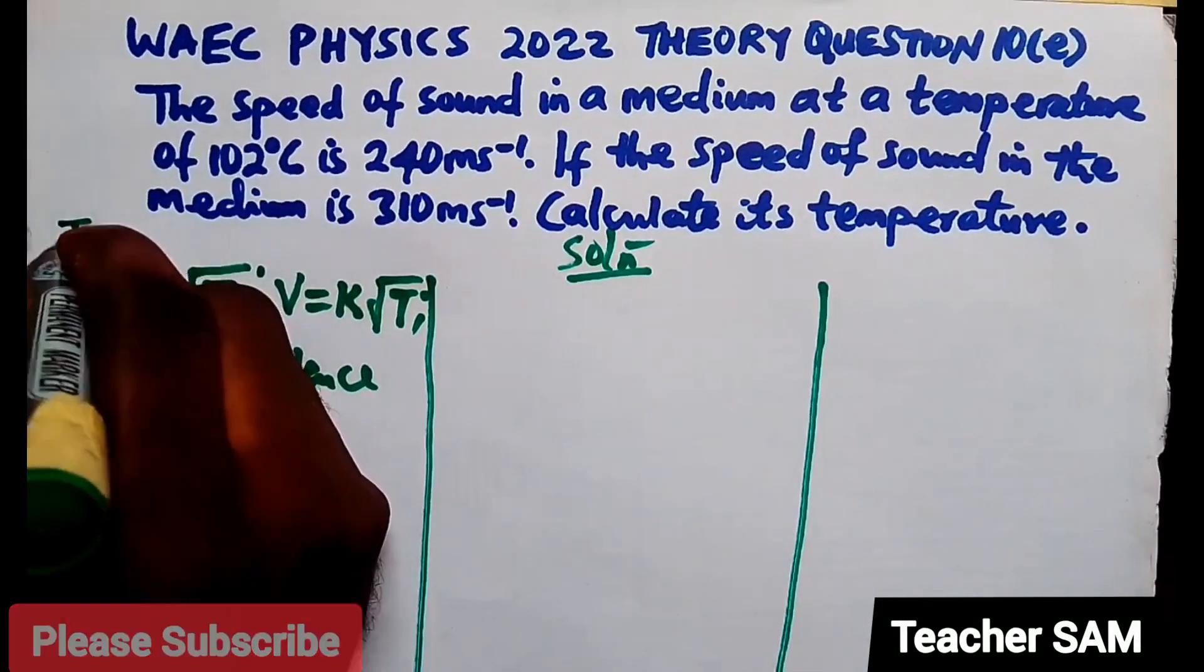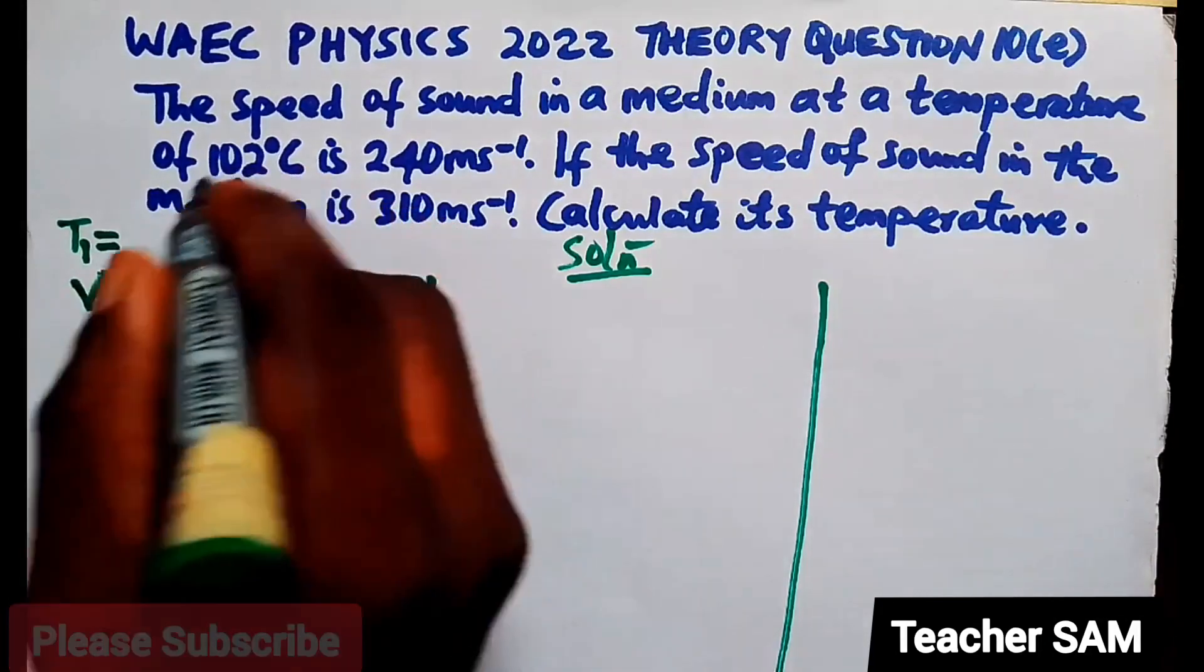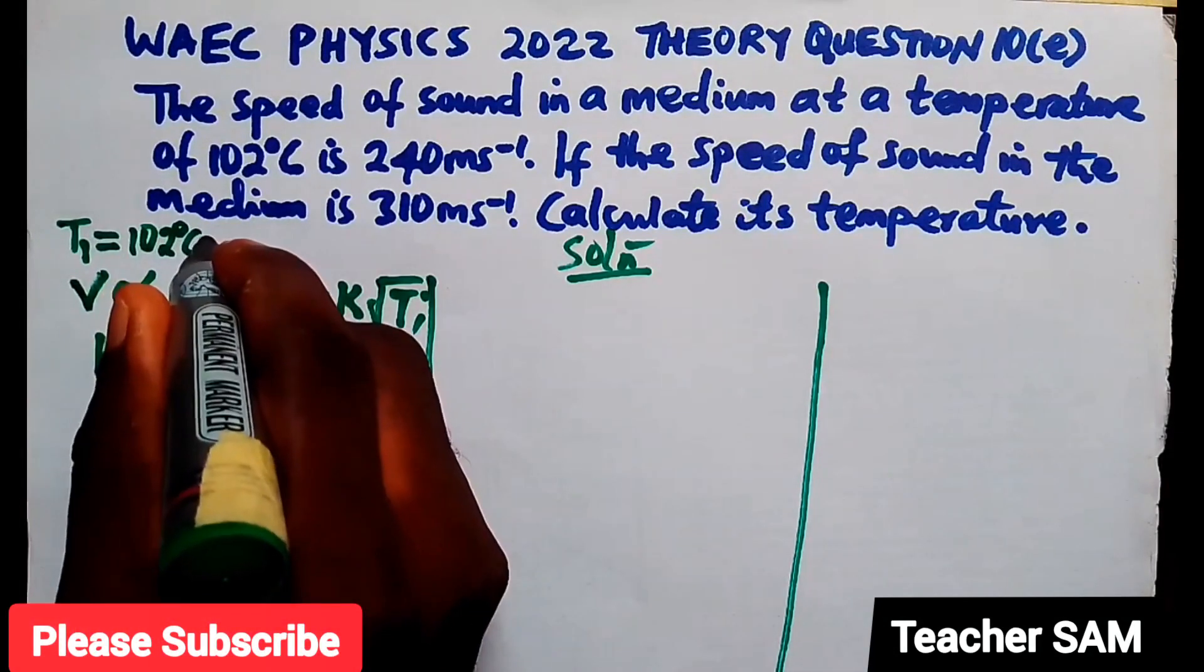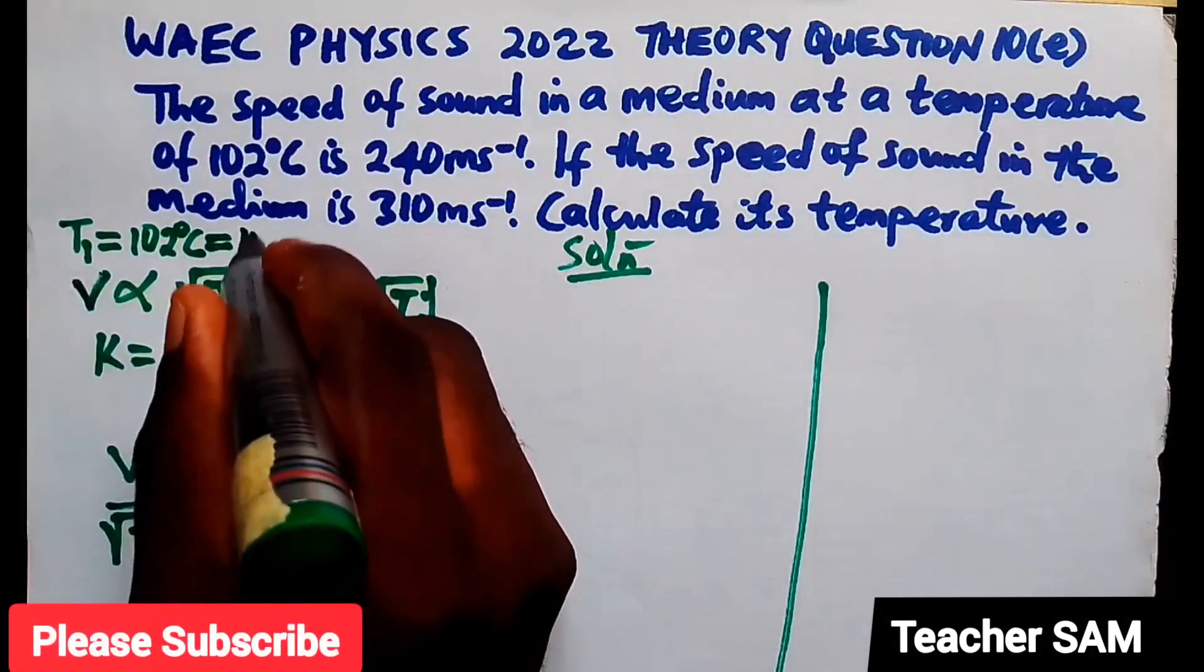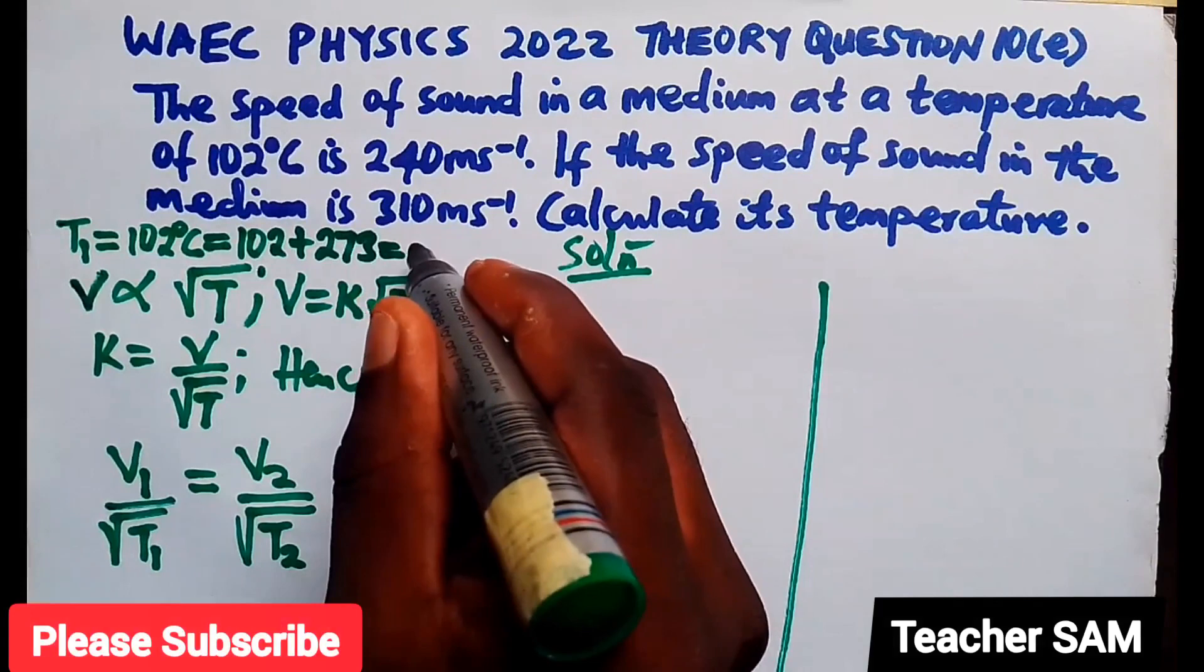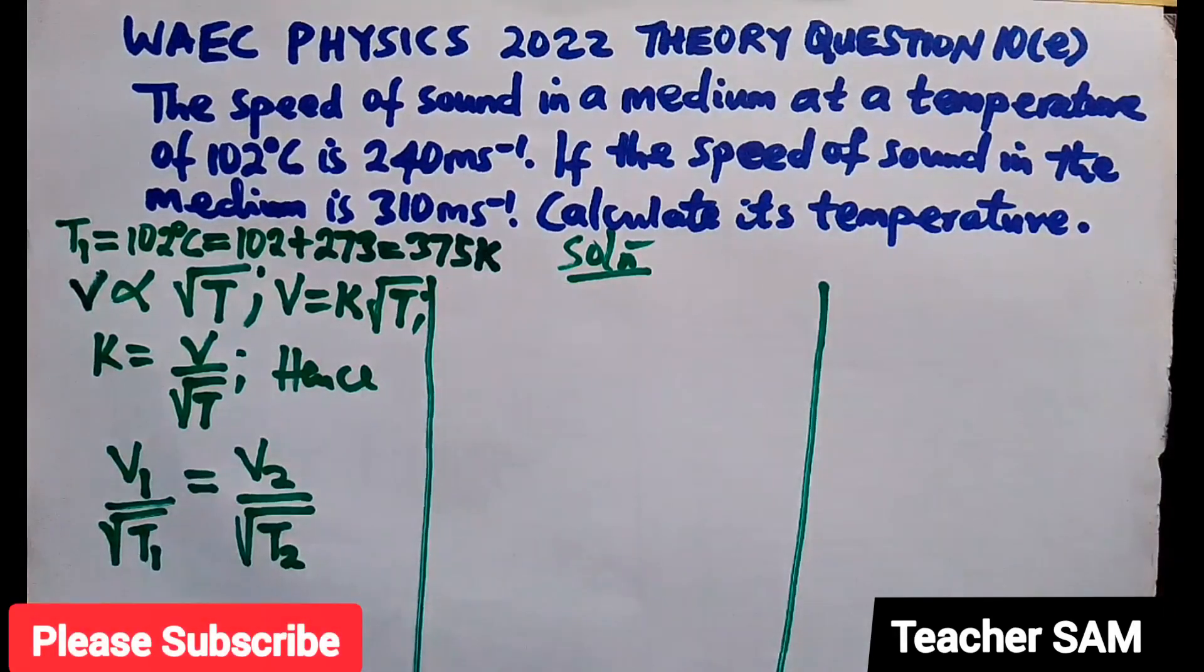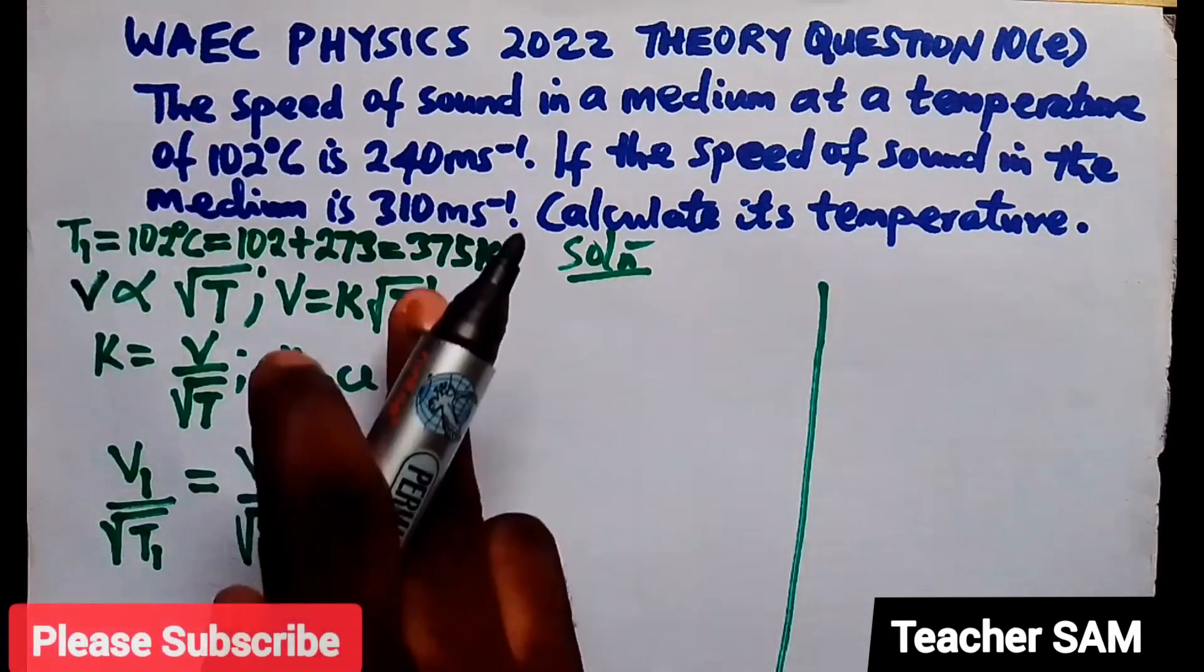The T1 was given to us here. What was given? T1 was given to us as 102 degrees Celsius. So, we're going to convert that to Kelvin. So, how do we do that? Remember that we add 273 to each of this temperature that is in degrees Celsius to change it to Kelvin. So, this will now be 102 plus 273 and that will give us 375, 375 Kelvin.